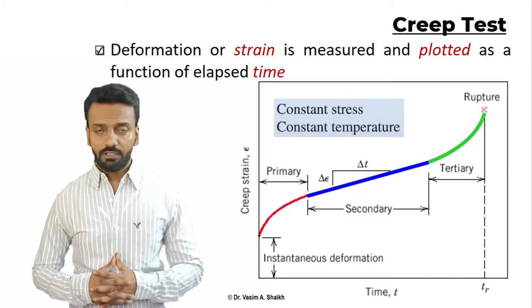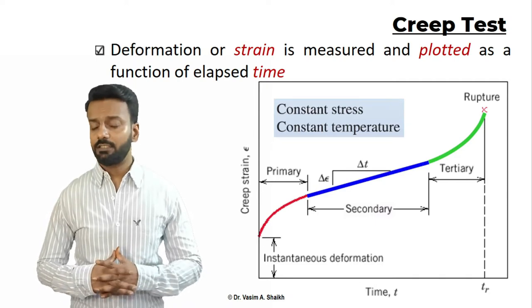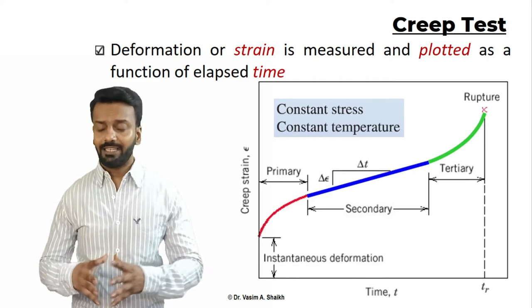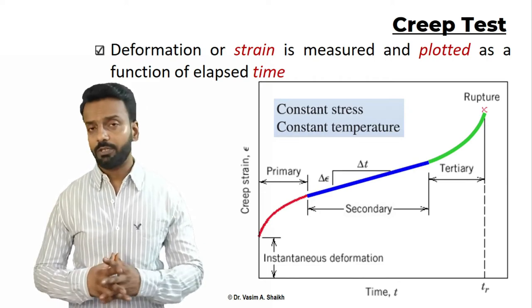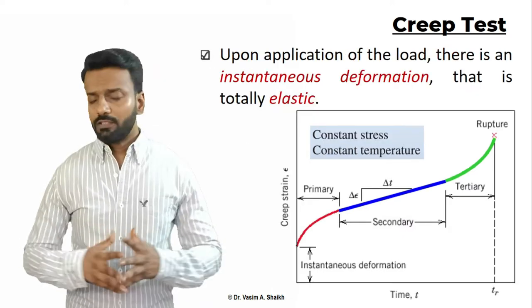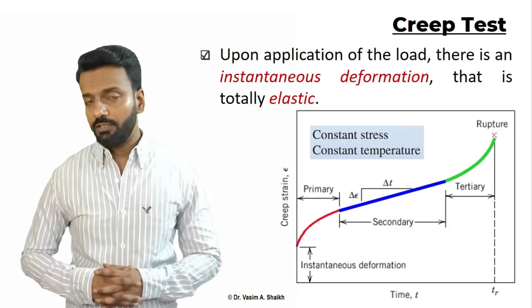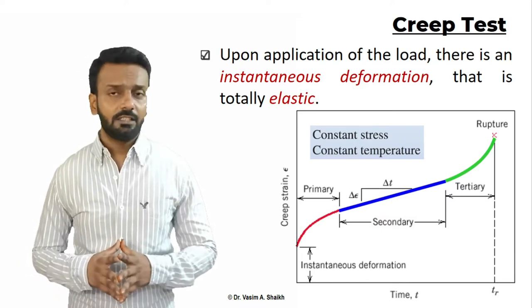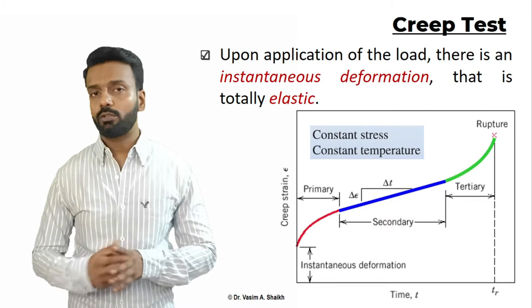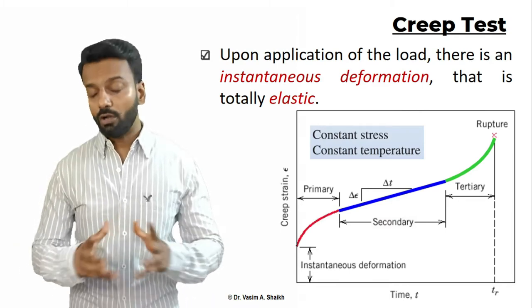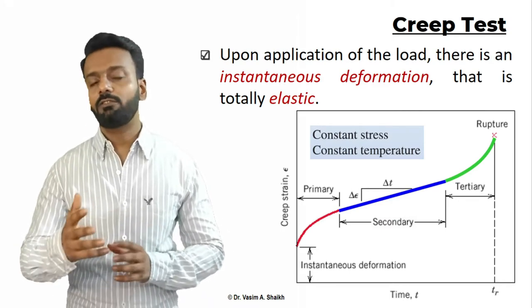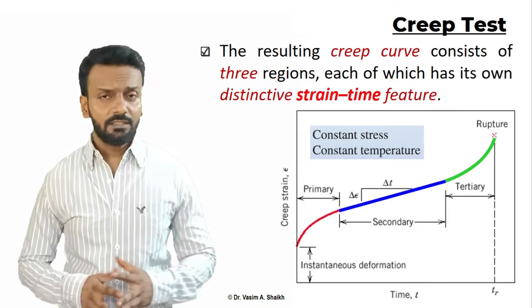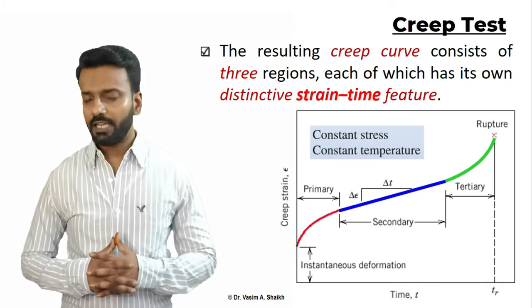There are three stages of creep failure: the primary stage, the secondary stage, and the tertiary stage where the material fails or ruptures. As soon as the material is loaded, there is an instantaneous elastic deformation. The moment you release the load, the material returns to its original shape. Beyond this elastic limit, the material enters the first stage, called the primary stage of creep.